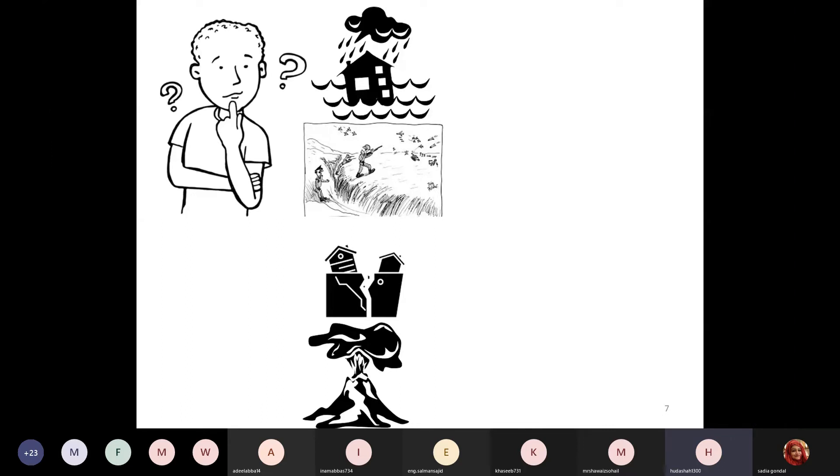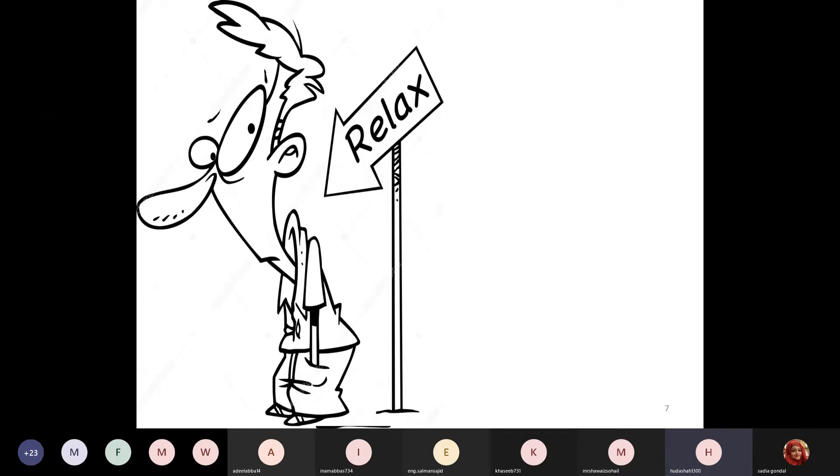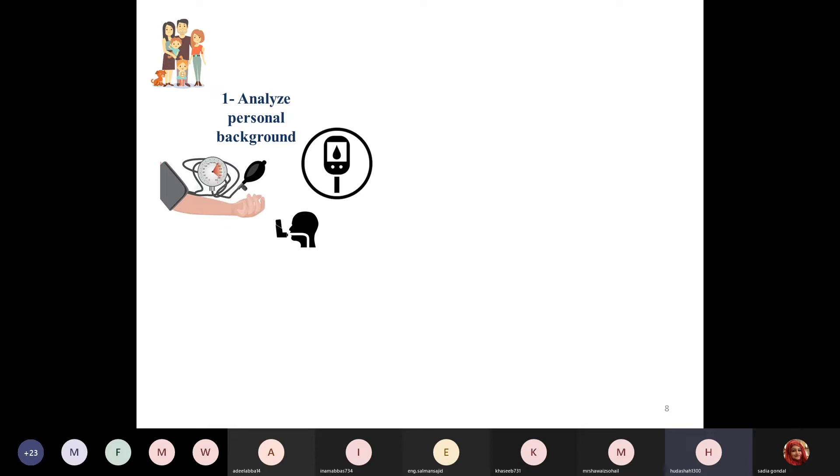In a natural disaster, you might be wondering how should I survive, what should be my plan? First of all, you have to relax and develop your personal preparedness plan. There are a few steps to it. Number one: analyze your personal background - how many family members you have, your medical history whether somebody has blood pressure, asthma, or diabetes, and the type of disaster you are facing, either heavy rainfall, landsliding, or tornado.